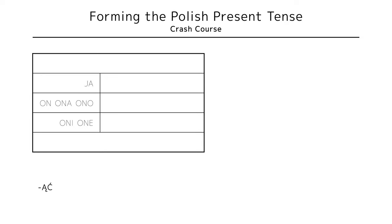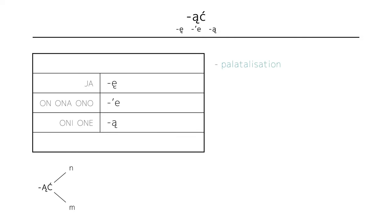Ąć verbs are also, in my opinion, suspicious verbs, only instead they're hiding an n, or more rarely an m, and take the exact same -ę, -e, -ą endings as the other suspicious verbs, palatalization and all.